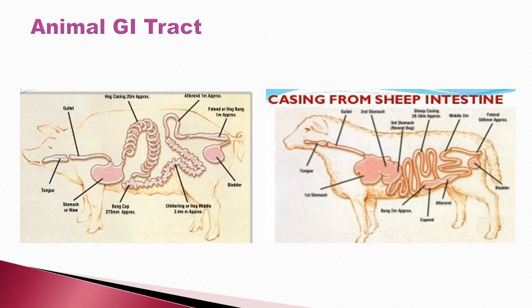The esophagus, stomach, small intestine, large intestine, and even the rectum — both in the case of sheep and goat — can be processed properly and then used as a sausage container or sausage casing.